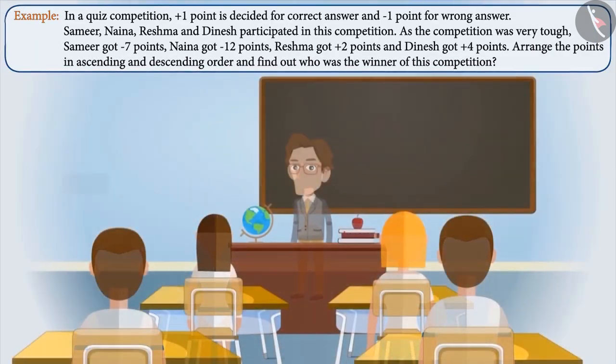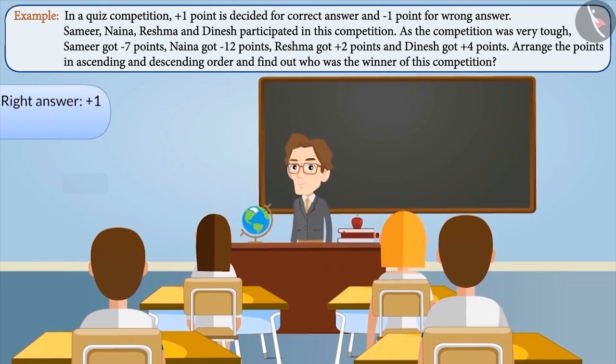Example 3. In a quiz competition, plus 1 point is given for a correct answer and minus 1 point for a wrong answer. Samir, Nayana, Reshma and Dinesh participated in this competition. As the competition was very tough, Samir got minus 7 points, Nayana got minus 12 points, Reshma got plus 2 points and Dinesh got plus 4 points. Arrange their points in ascending and descending order to find out who was the winner of this competition.